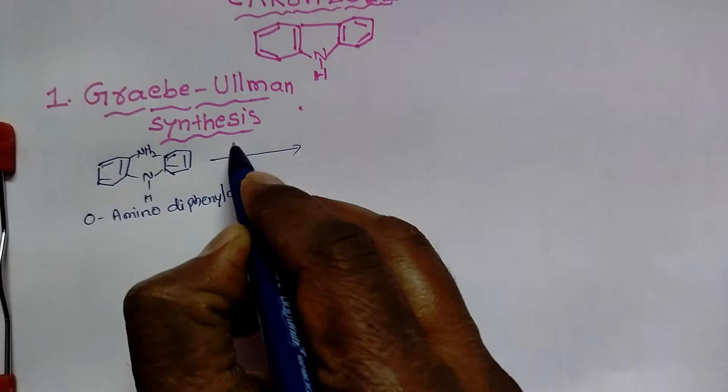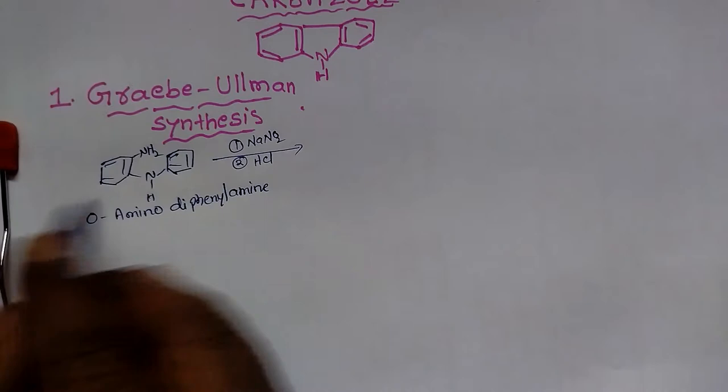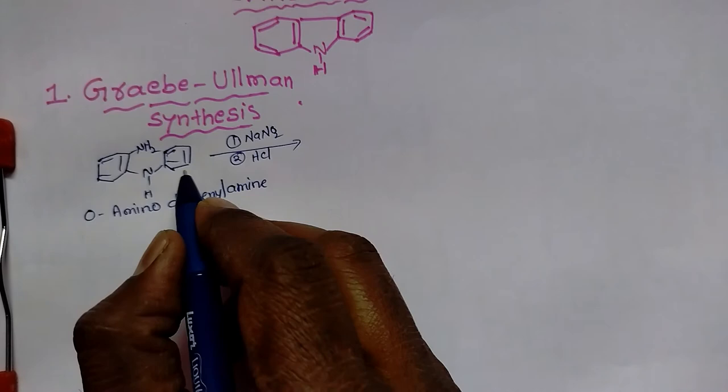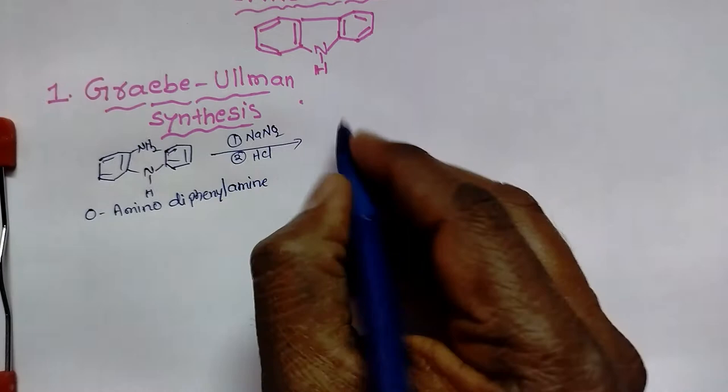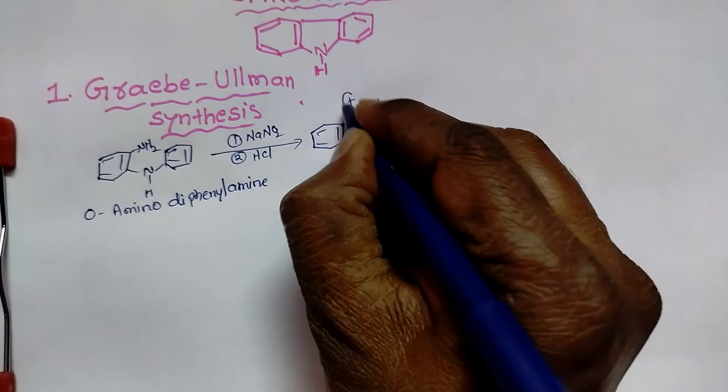Ortho-amino diphenylamine is the starting substance. This amine is converted into the diazo group by treating with nitrous acid. Nitrous acid is obtained by mixing sodium nitrite with dilute HCl at a lower temperature. This reaction is known as diazotization. Due to diazotization, the amine group is converted into the diazonium ion.